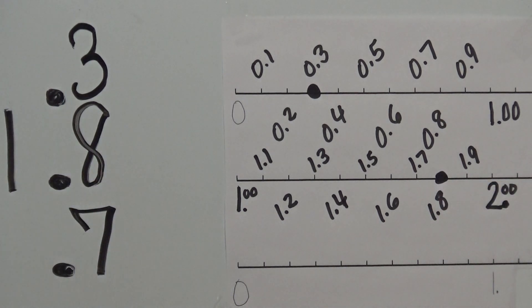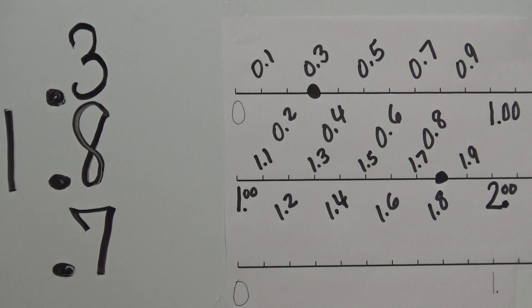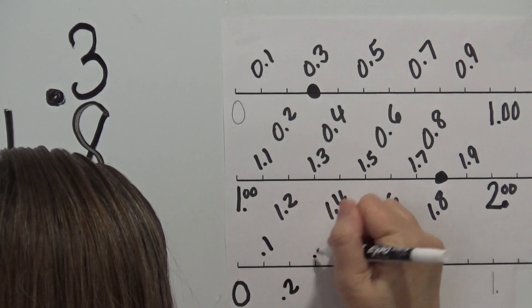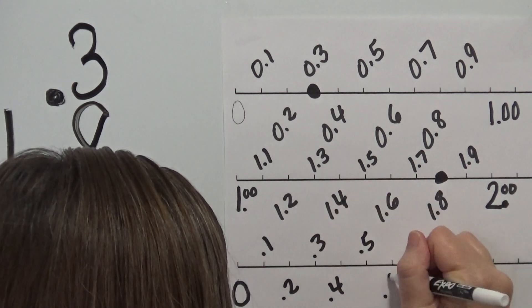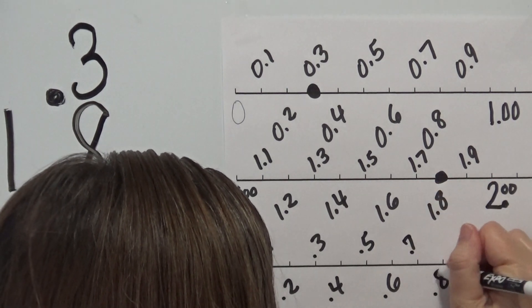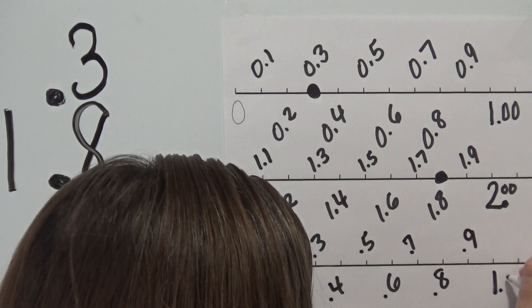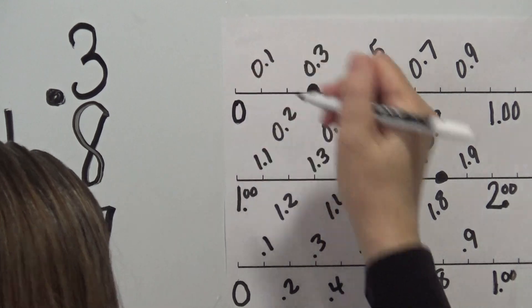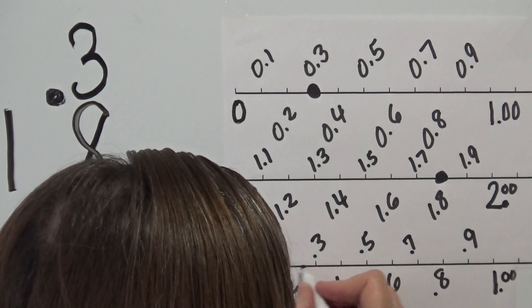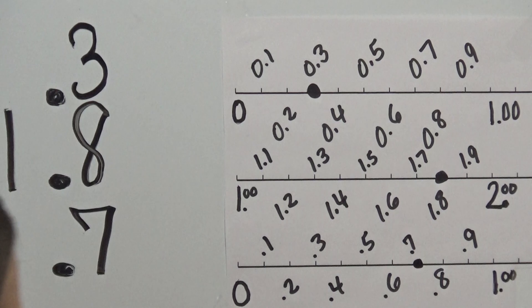The next one — we have seven tenths. If you want to pause the video and work this one out and then see if you get it correct, go ahead and do that. So we have zero, point one, point two, point three, point four, point five, point six, point nine, and one whole dollar. We're looking for seven dimes: one, two, three, four, five, six, seven — seven dimes.